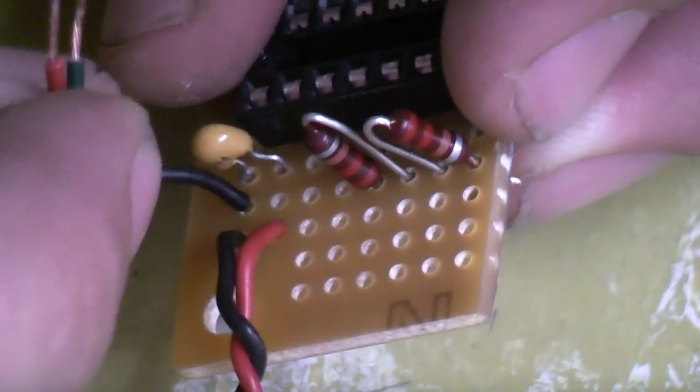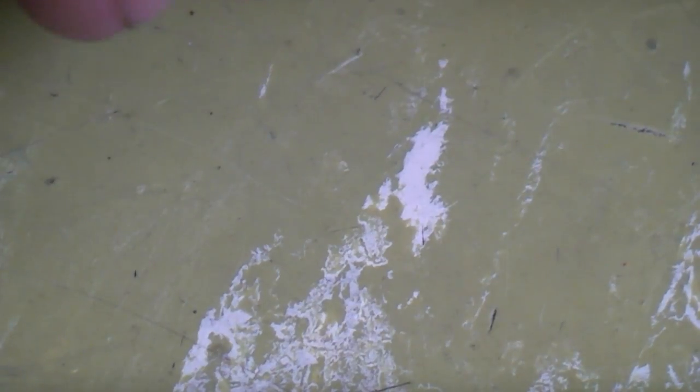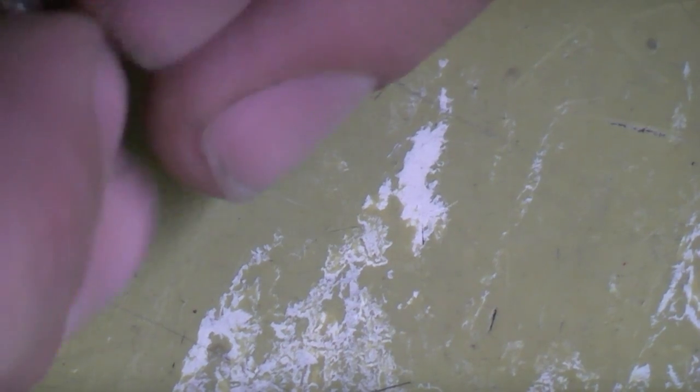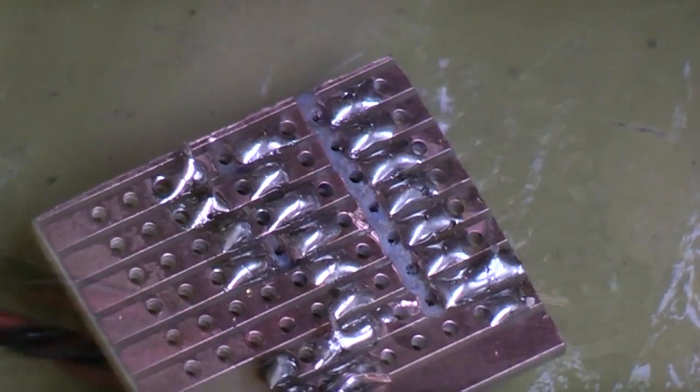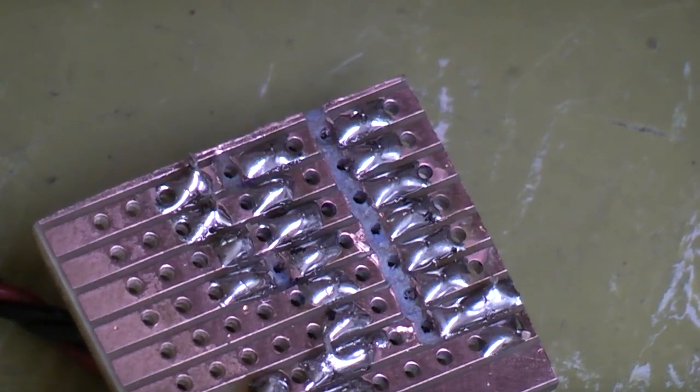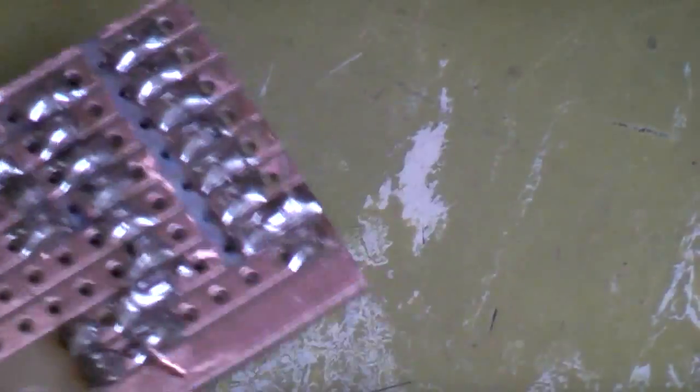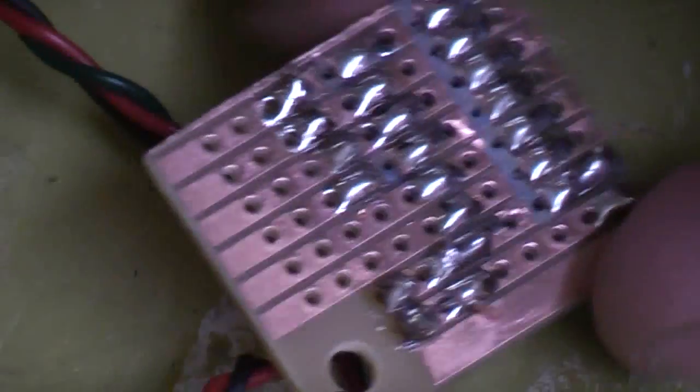So what I'm going to do is I'm just going to attach the ground to the LED. Just got a nice little gap there, so I'm just going to poke that in and just give that a bit of a twist over. Okay, so I'm just going to get our ground wire quickly soldered on.